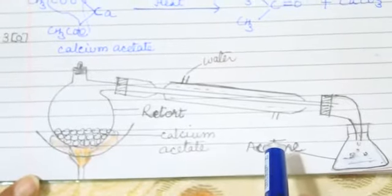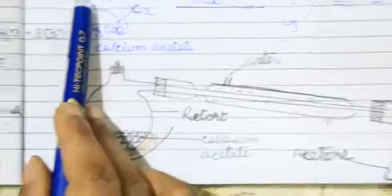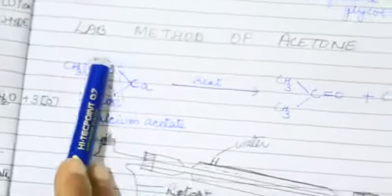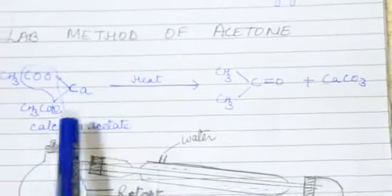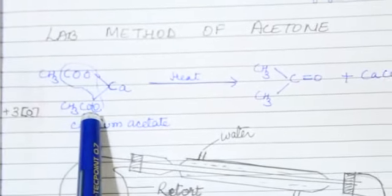The liquid is acetone. In the reaction, three molecules of oxygen get attached with carbon and calcium to form calcium carbonate. The leftover is acetone.